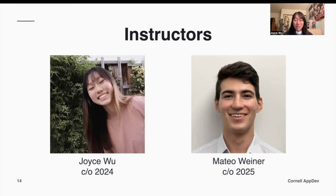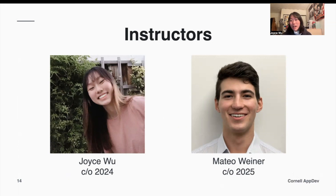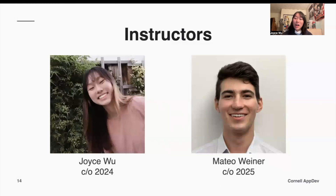I'm Joyce. I'm a junior and I study CS and Economics in the Arts and Sciences school. This is currently my third semester on AppDev. Mateo studies CS and ECE in the Engineering school — he's a sophomore and it's also his third semester on AppDev.